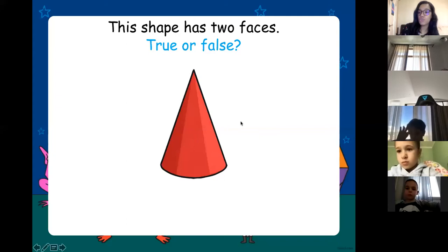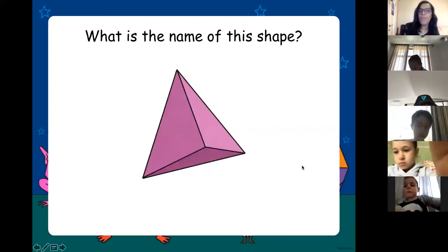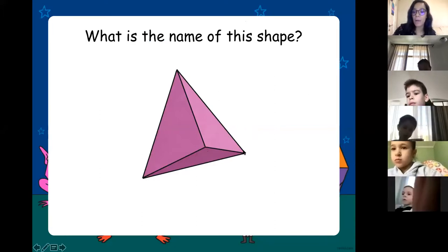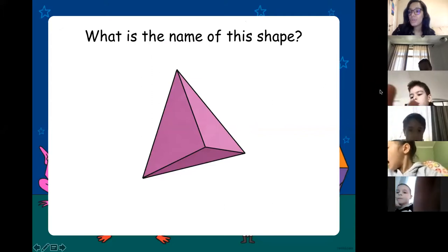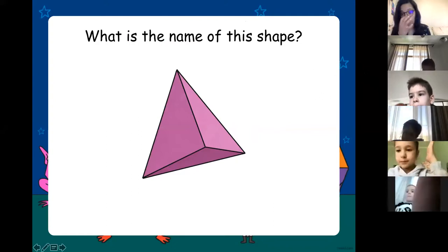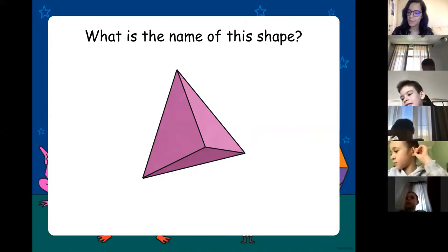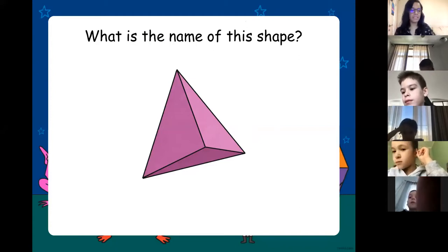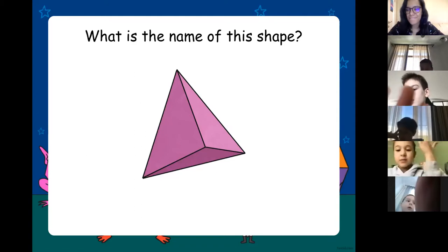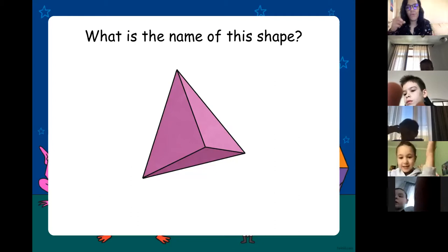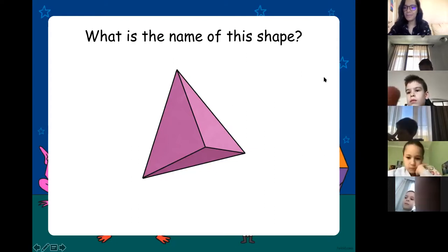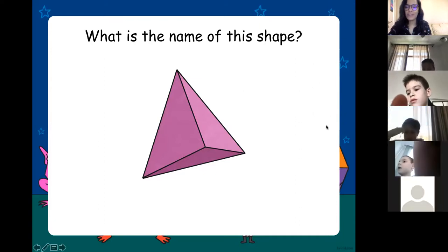True — it is true. Two faces: the bottom and all around. Stephan, what is the name of this shape? Look at the bottom — it's not a square. Let's see if Stephan can get it. It has two names. Would you like some help? Timur says: triangle prism.